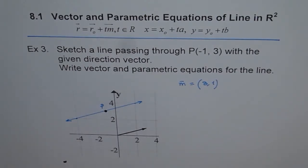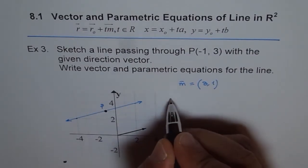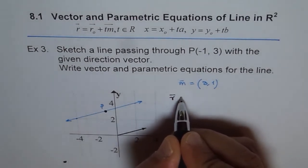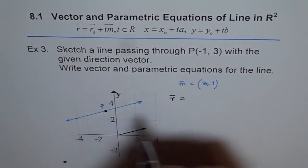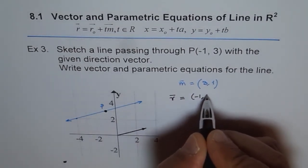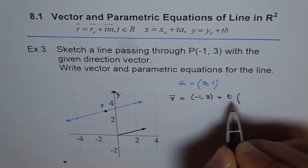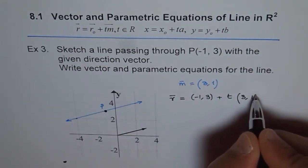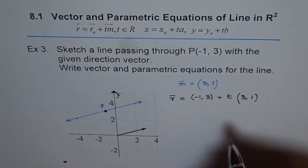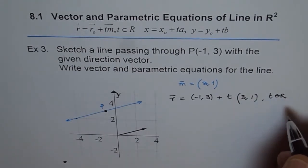To write vector and parametric equation of the line, what we need is a point and the direction vector. So the vector equation is R, which is equal to R₀ (R₀ is the point given to us, which is (-1, 3)) plus t times the direction vector, which is (3, 1). Correct. Here t belongs to real numbers.